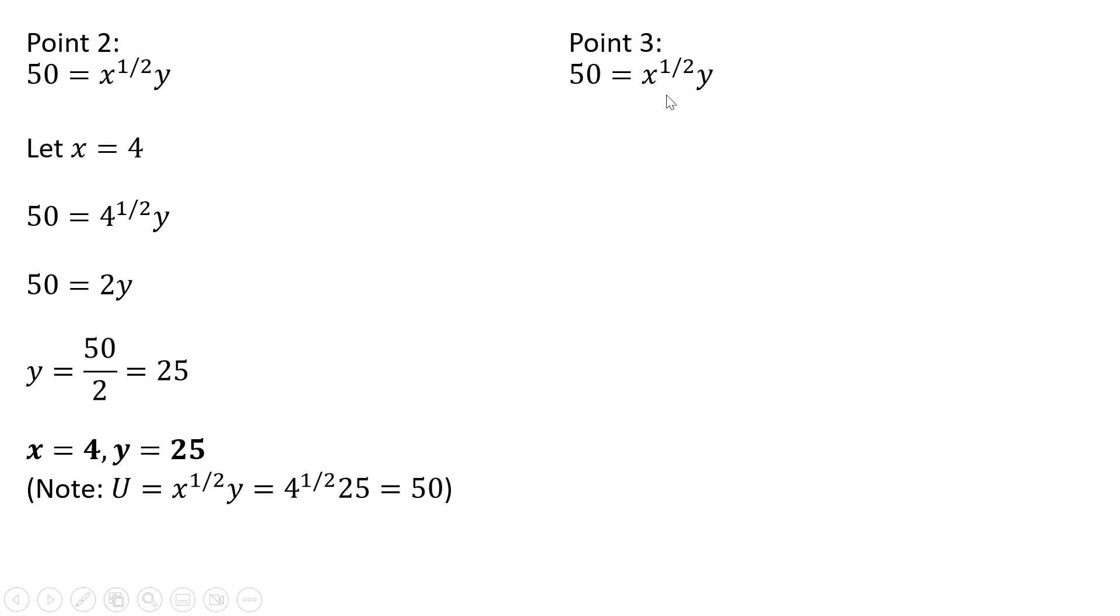And our third point here, starting off the same way, setting U equal to 50. This time we can let y equal some value. We don't always have to set x equal to something, so let's let y equal 5. Plugging that into our equation here and now solving this for x. First going to divide through by 5, so 50 divided by 5 is 10.